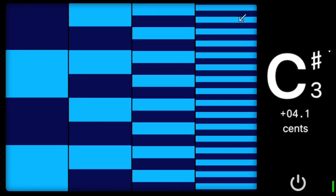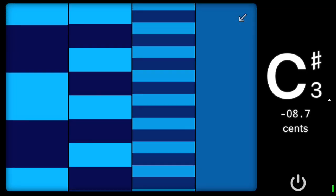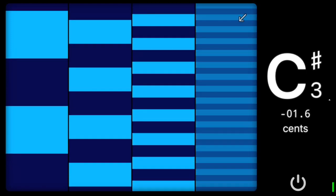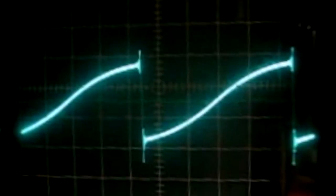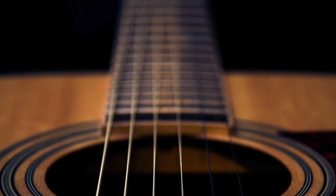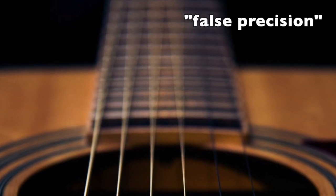Some tuners claim to detect the pitch to the nearest tenth of a cent. They may really be capable of detecting with that level of precision for certain types of sounds, like synthesizer waveforms, for example. But if we expect them to have that same accuracy for guitar strings, we're probably falling victim to the fallacy of false precision.